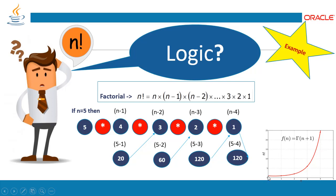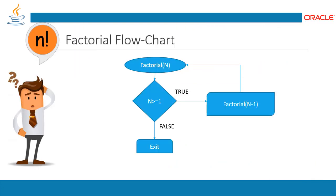If you look at a graph, it shows the behavior of this factorial logic and how it presents its results. Factorial of 0 is equal to 1, so it starts from 1, and as you increase the values of n, the factorial increases exponentially. This graph shows the behavior of the system.